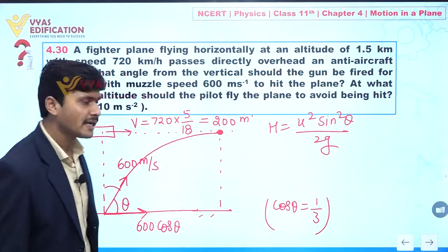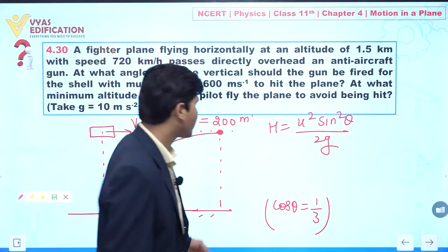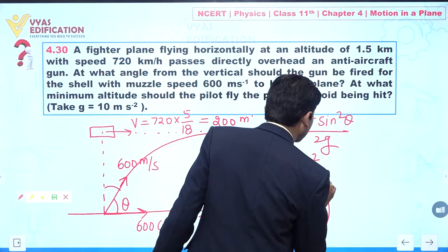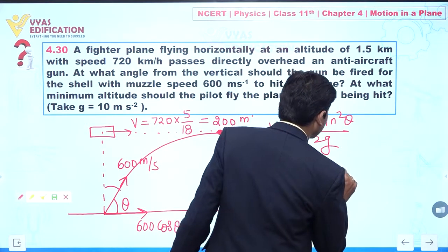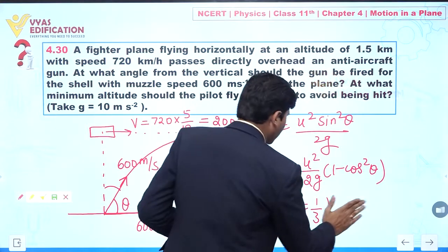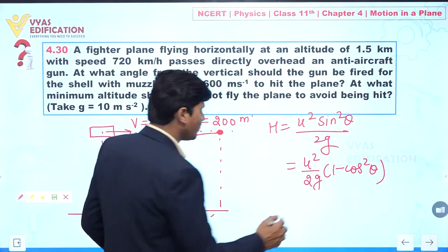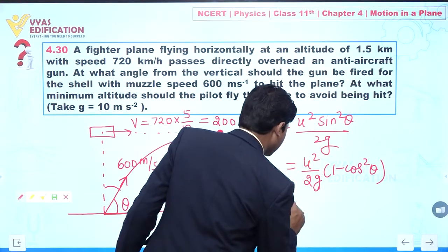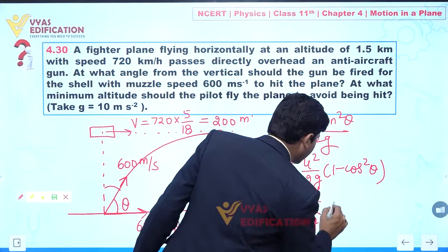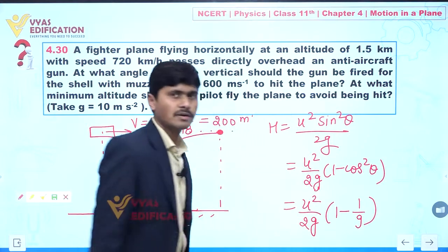Maximum height is given by u² sin²θ divided by 2g, where θ is taken from the ground. This equals u² by 2g multiplied by (1 minus cos²θ). Now the value of cosθ is 1 by 3, so this equals u² by 2g multiplied by (1 minus 1/9).